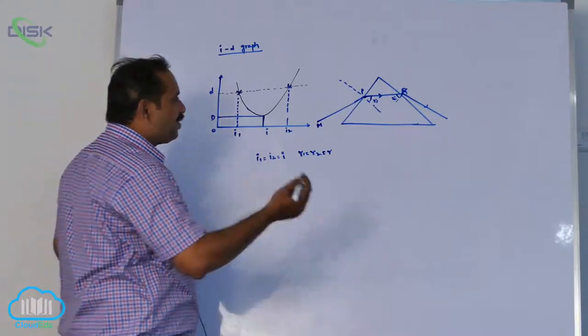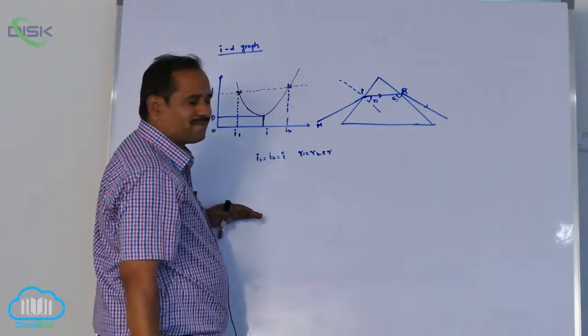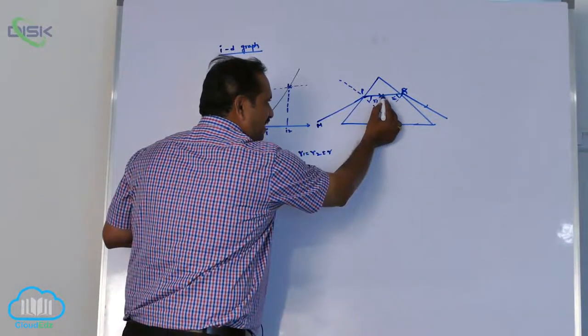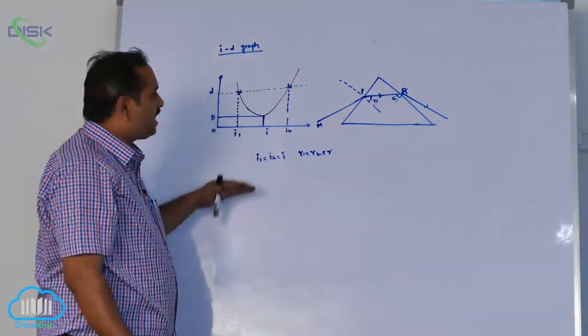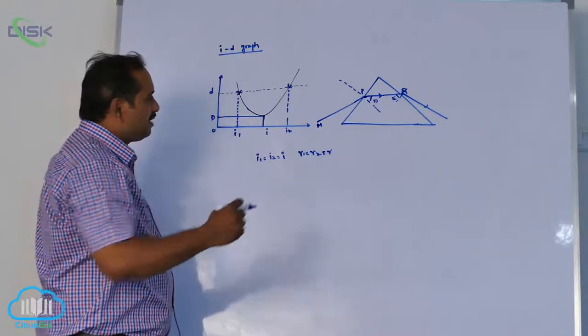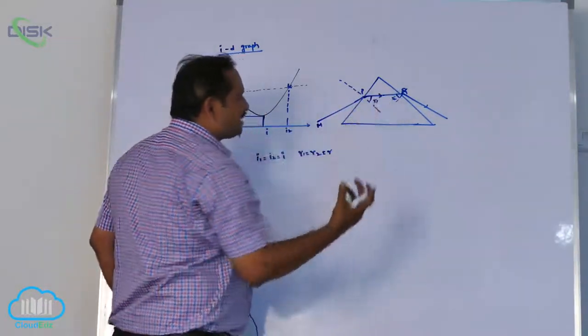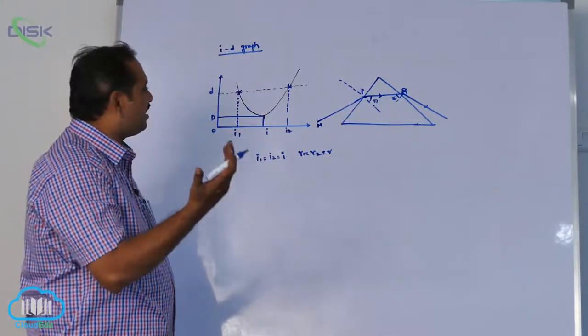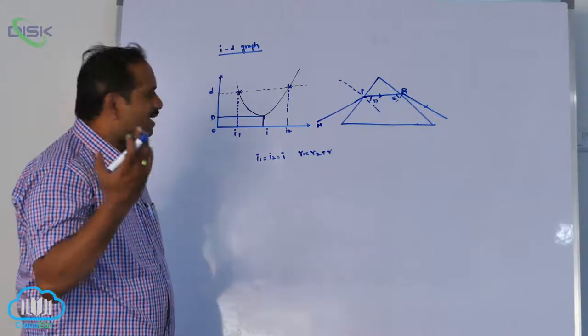Very, very important bit, even local exam also they repeated more number of times. At minimum deviation, refracted ray is parallel to the base of the prism. One more point: parallel means sometimes they ask us angle with the refracted light with base, that is 0 degrees.